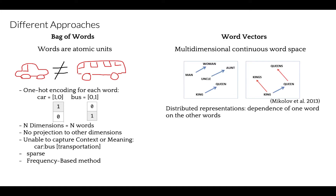Next comes the idea of generating distributed representations. A word should preserve some dependence on other words — for example, words in the context of a specific word should get a greater share of this dependence. These dependencies can be captured when word vectors are represented as multidimensional continuous floating point numbers, where semantically similar words are mapped to approximate points in geometric space.